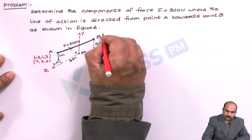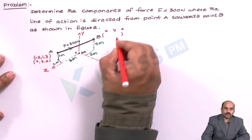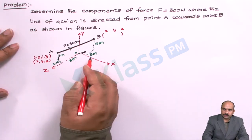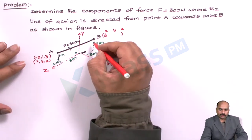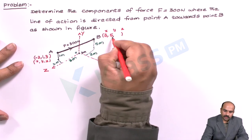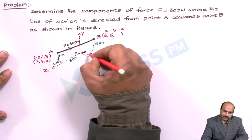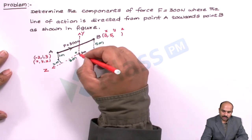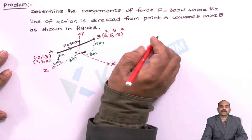Similarly for point B, we write x, y, z coordinates. The 3 meter distance is about the x-axis, so the x component is 3. The 5 meter is along y, so the y coordinate is 5. The 3 meter line is parallel to the z-axis but beyond the origin, so it is minus 3. So point B has coordinates: x = 3, y = 5, z = −3.